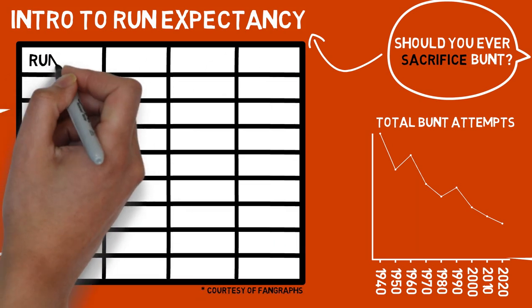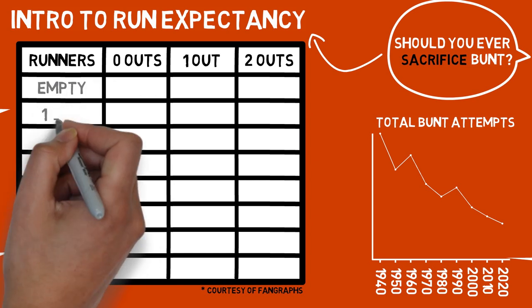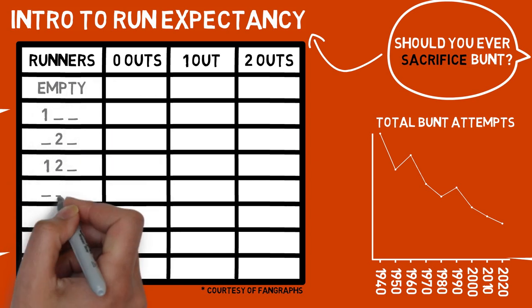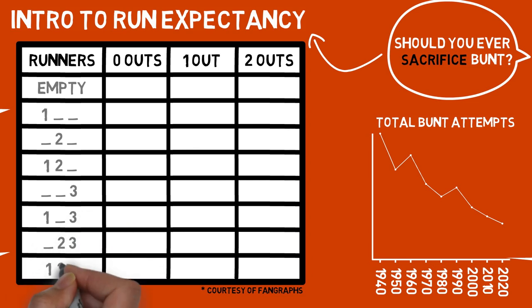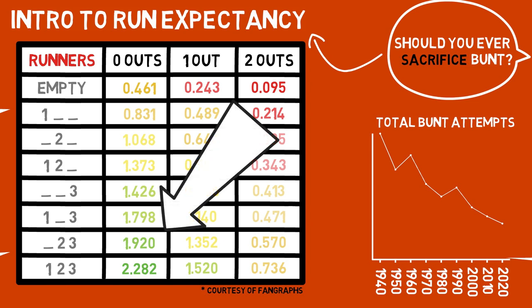This chart gives you the total number of runs you are expected to score based off of your current combination of both outs and runners on base, compared to every game that has happened in the past. This may change slightly from year to year, but in the long run this chart will always tell the same story. The column on the far left indicates which bases are occupied by runners. For example, the first one is a runner on first with no players on second or third base. You will see that our run expectancy for each situation varies significantly, and you'd much rather be in a situation to score 2.2 runs than .095 runs.